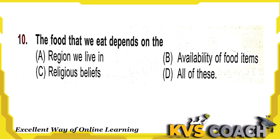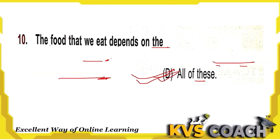Question 10: The food that we eat depends on the region we live in, availability of food items, religious beliefs — all of these. People near the sea eat seafood; people in coastal areas eat maximum seafood; people in the desert eat food available there; and religious beliefs also play a role. So option D — all of these — is the right answer.